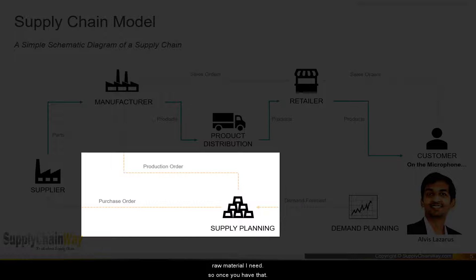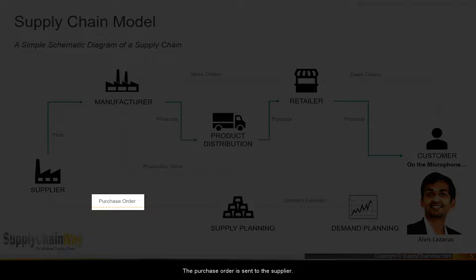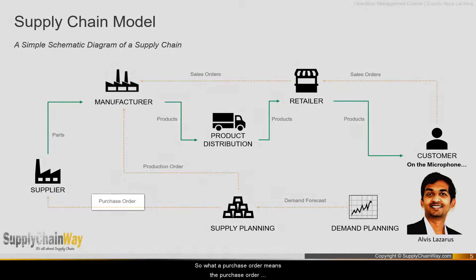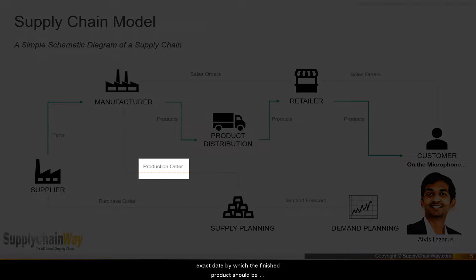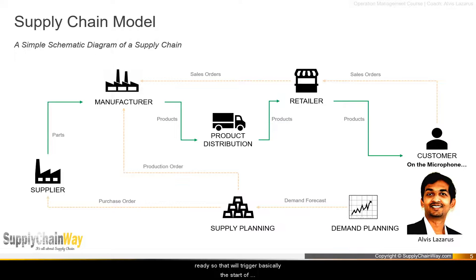Once you have the raw material list, a purchase order is sent to the supplier. The purchase order tells the supplier which raw materials are needed and by when they must arrive at the manufacturing facility. A production order triggers the start of production — it specifies the exact date by which the finished product should be ready. Both the purchase order and the production order are then released to the supplier and manufacturer respectively.